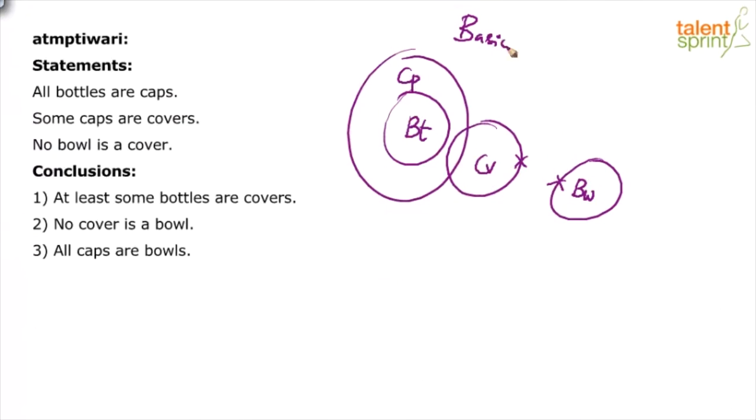That's the basic diagram for the given statements. What did we ensure here? We've ensured minimum overlapping. All bottles are caps anyway has to be done this way.